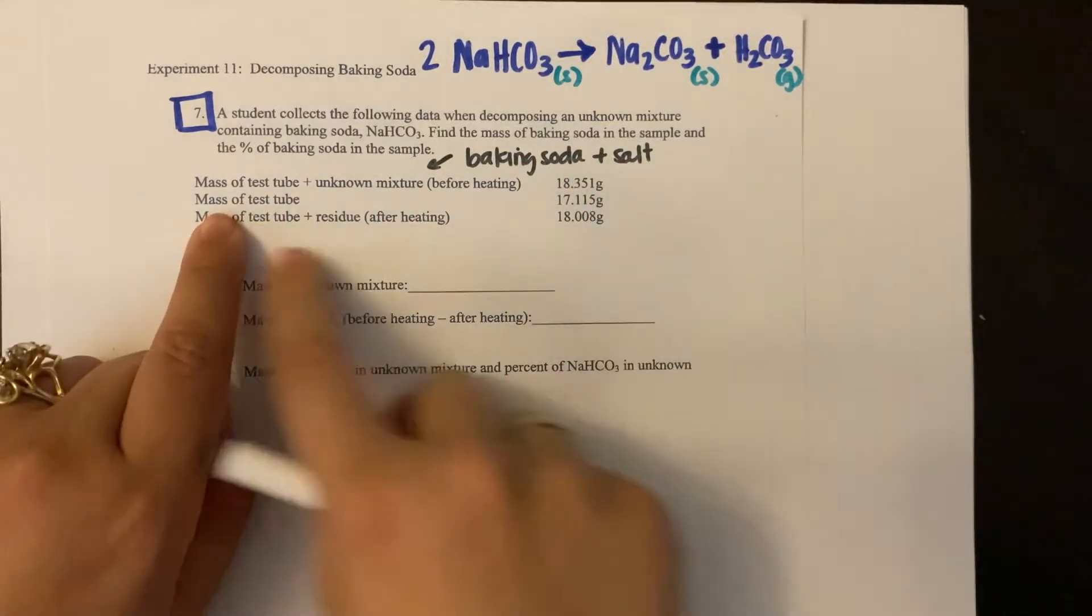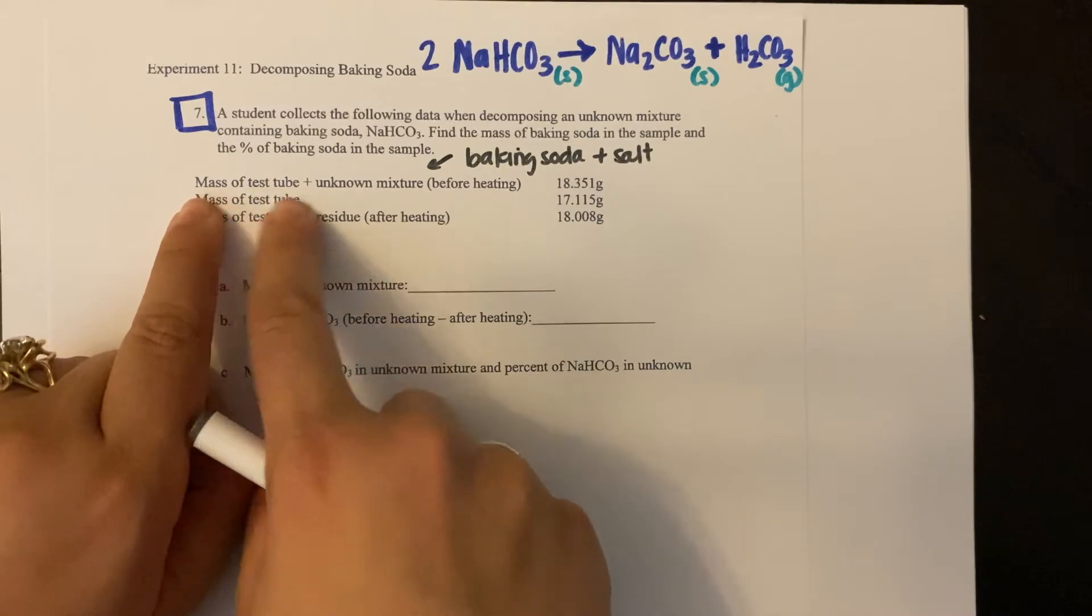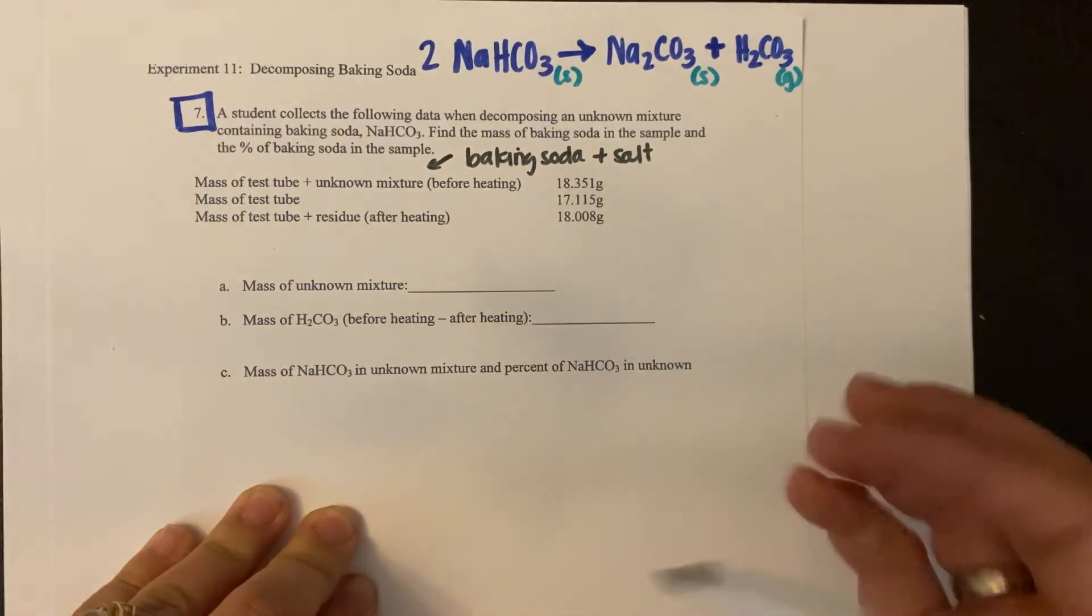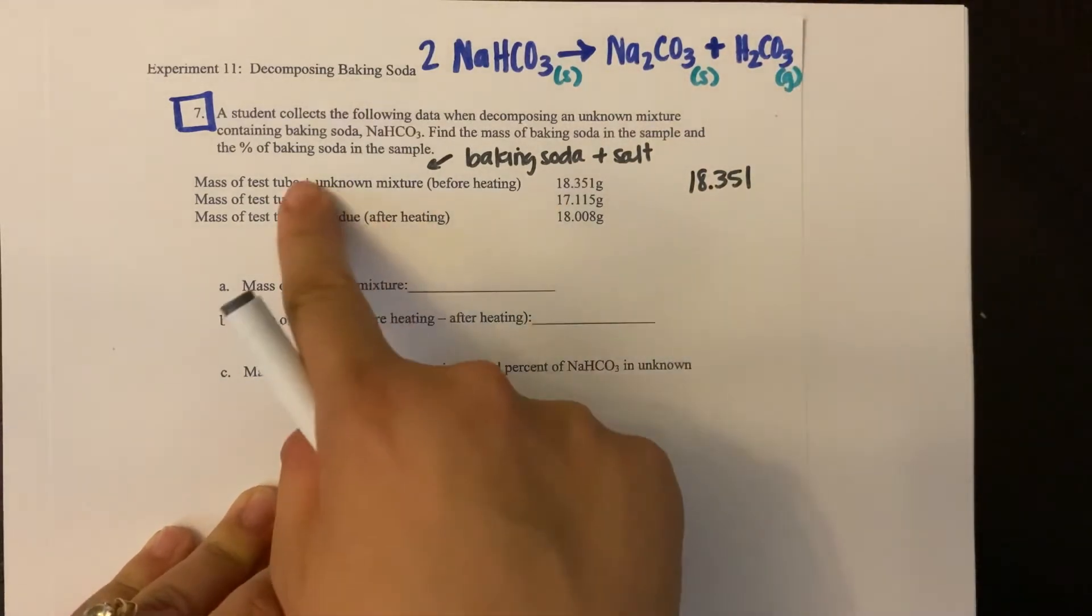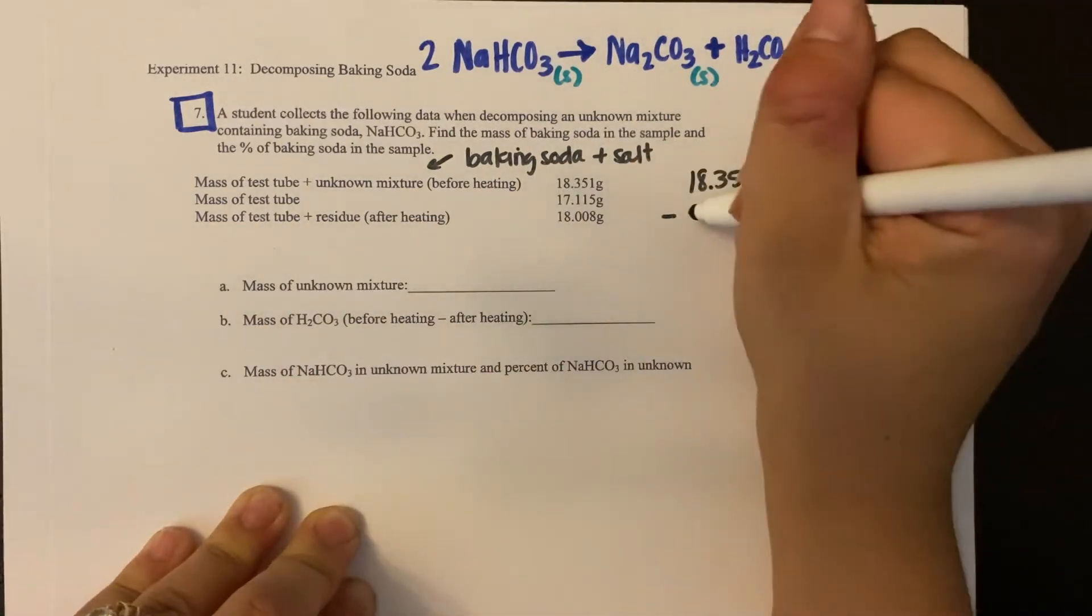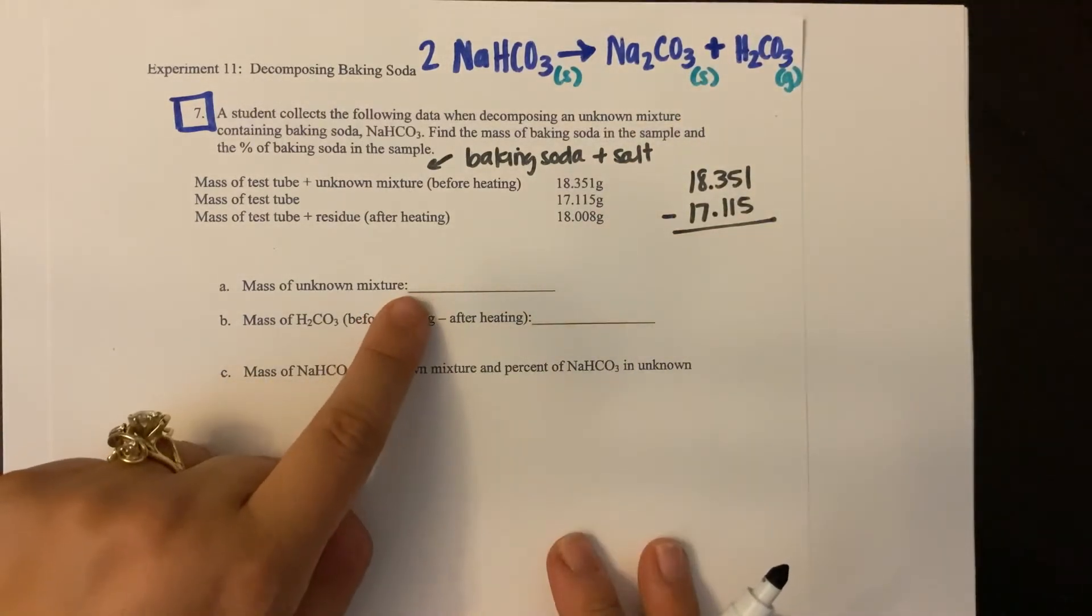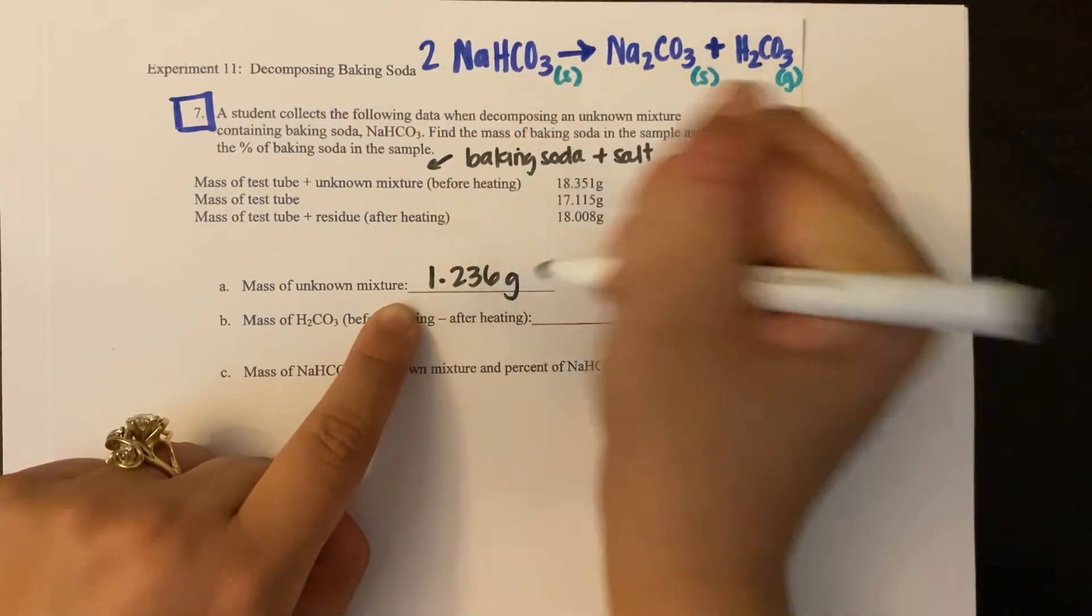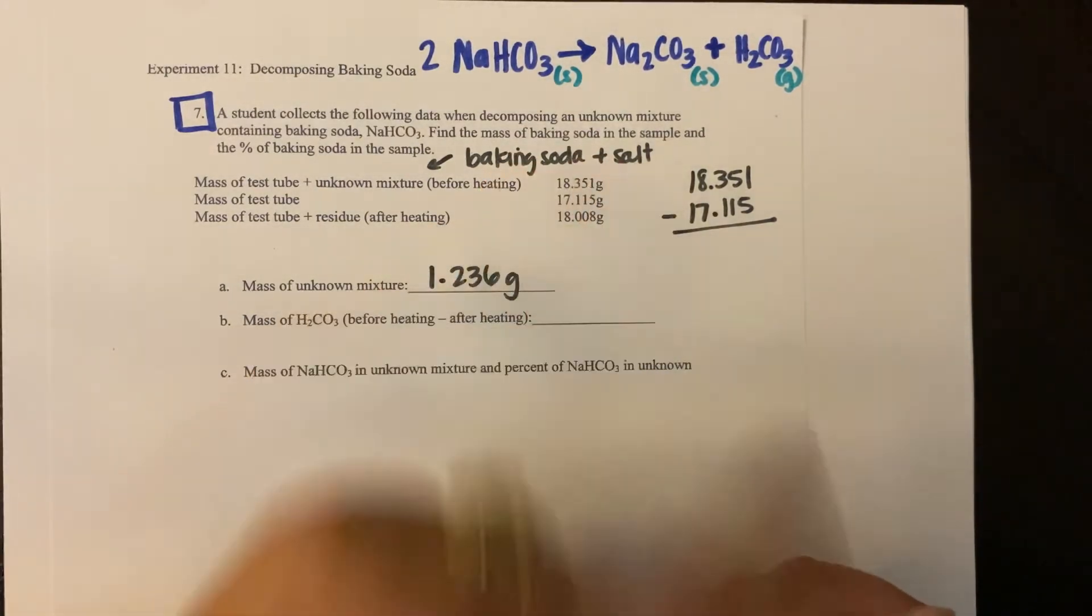And the way I do that, I have the mass of my test tube just by itself, 17.115 grams, and the mass of the test tube plus my unknown, 18.351. So I just do some simple subtraction. I take the mass of my test tube and unknown, and I subtract the mass of my test tube empty, 17.115, and I should get the answer of 1.236 grams. So this is my unknown mass, which again is going to be baking soda and salt.